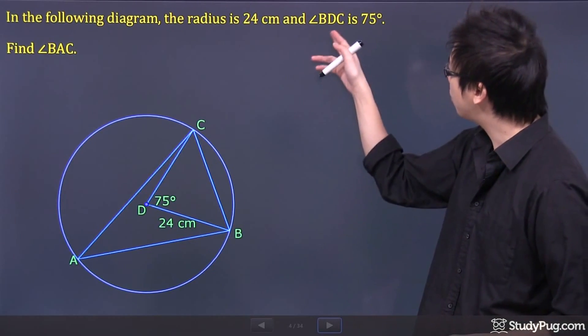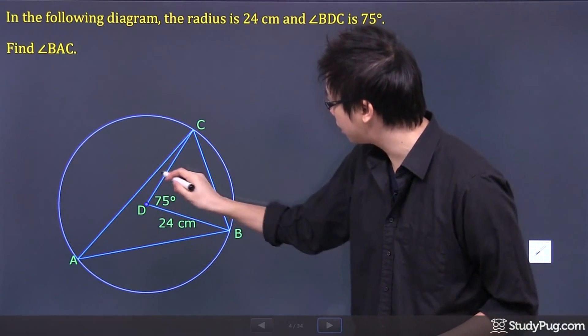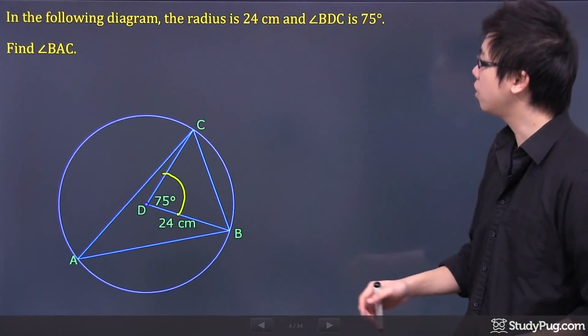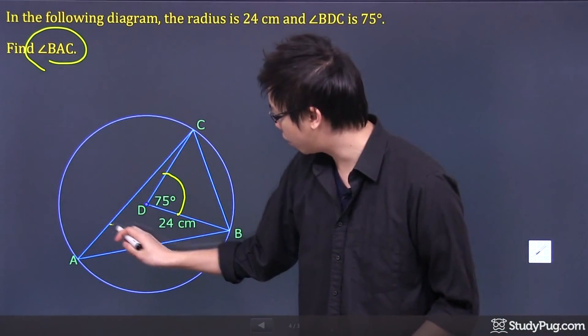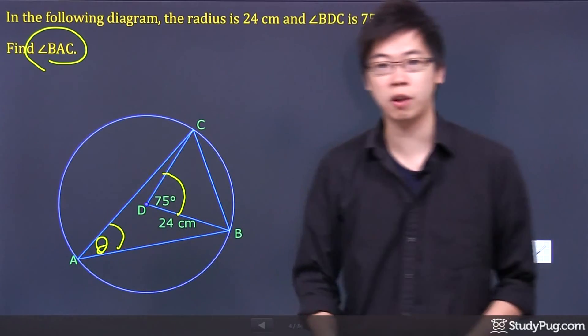And we know the angle BDC, that's this angle right here, is 75 degrees. We're trying to figure out the angle BAC, which is right over here. That's the missing angle that you're trying to figure out.